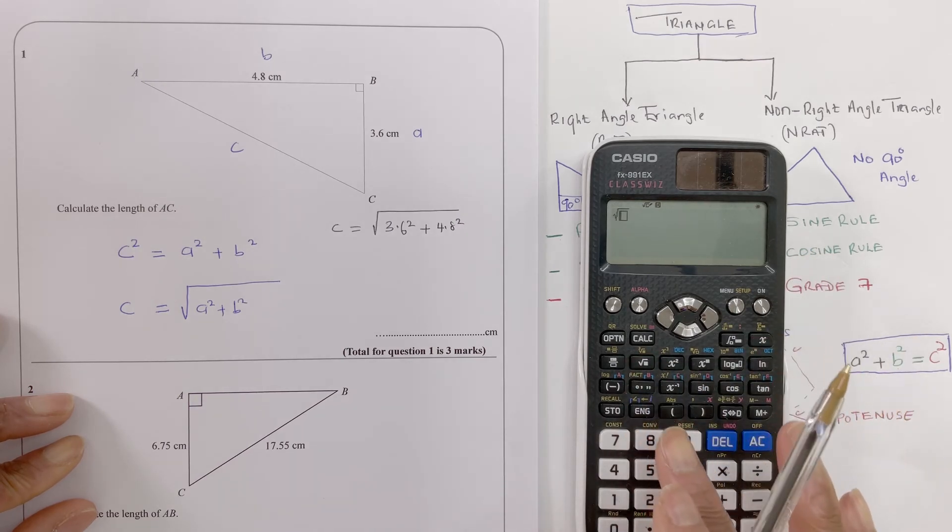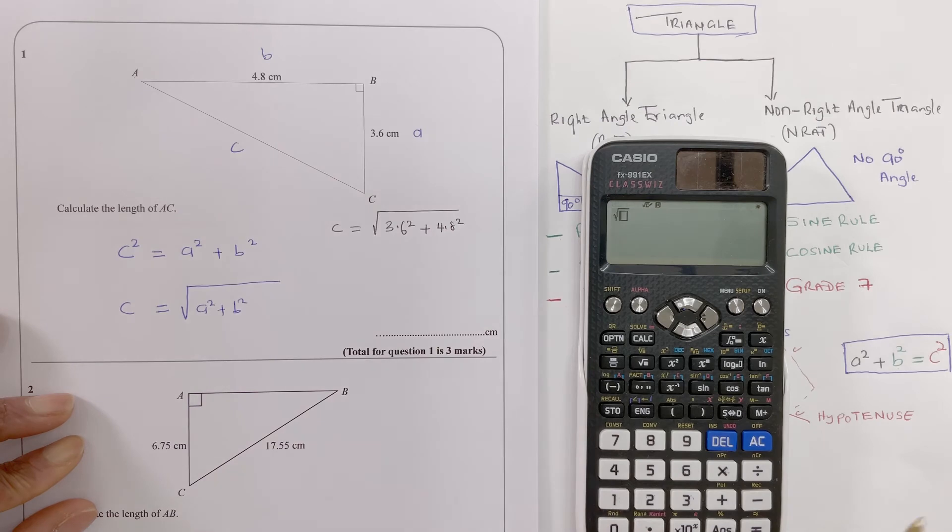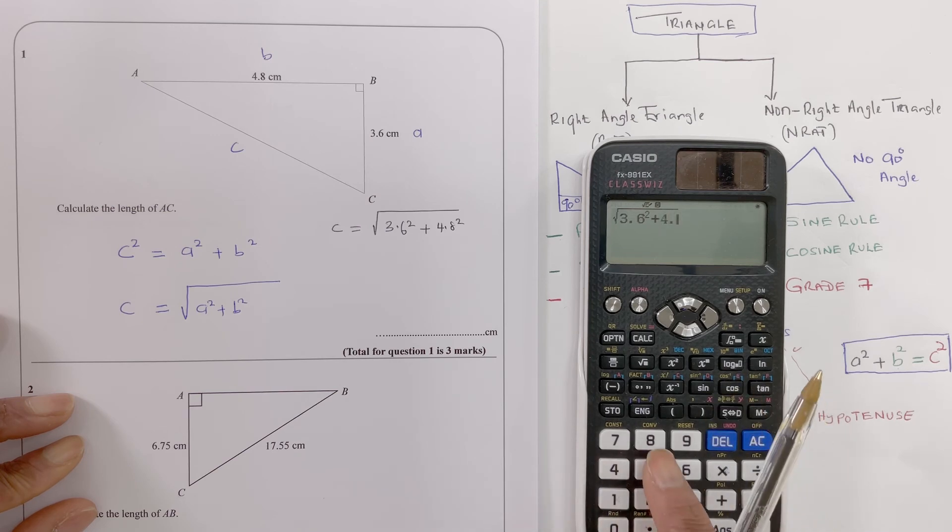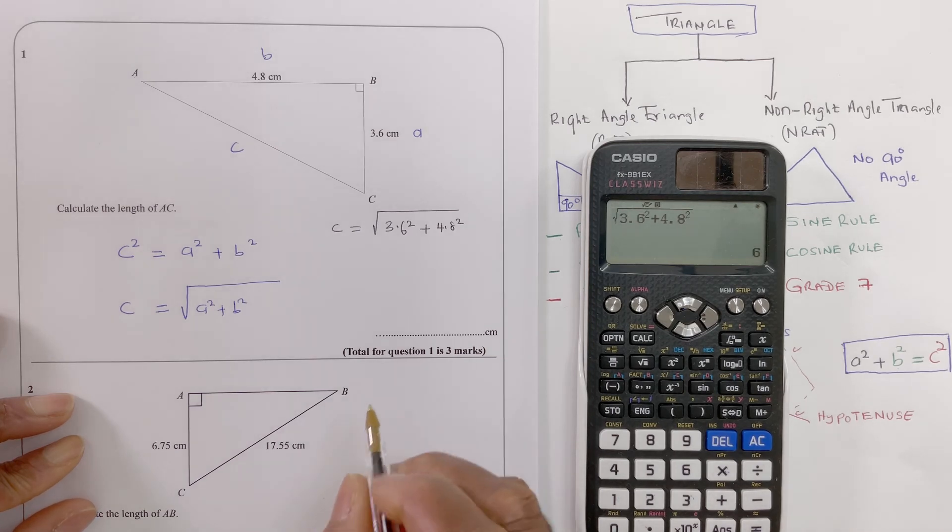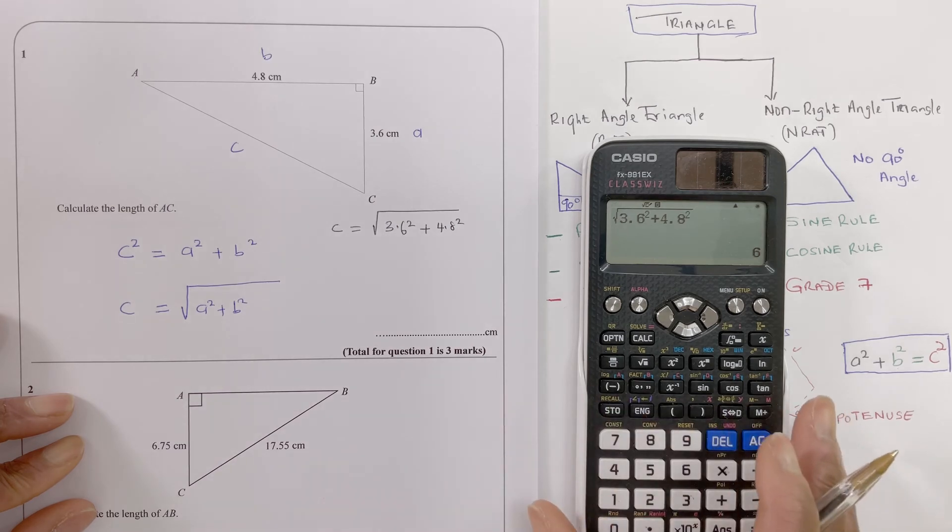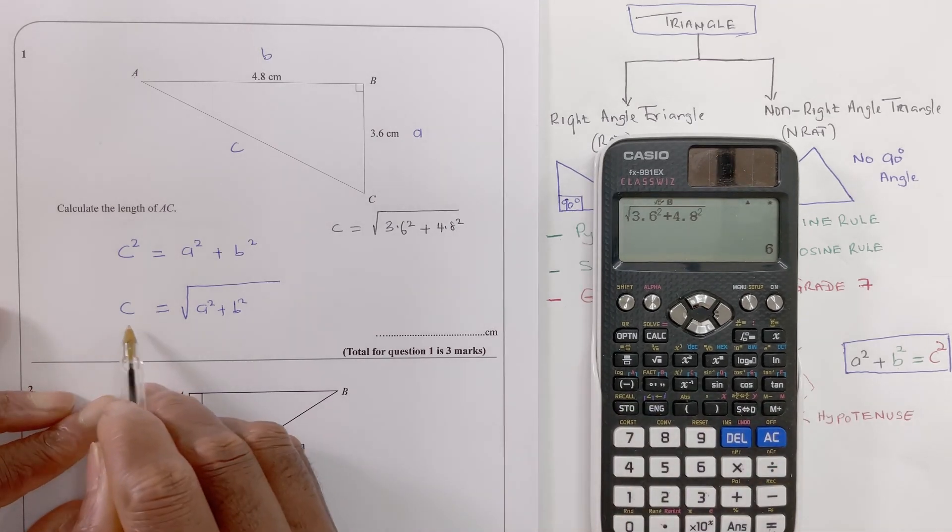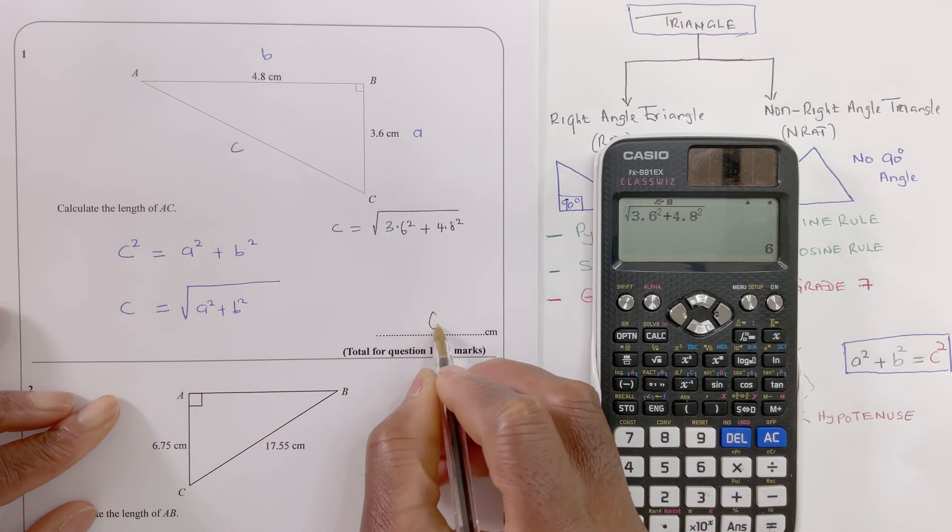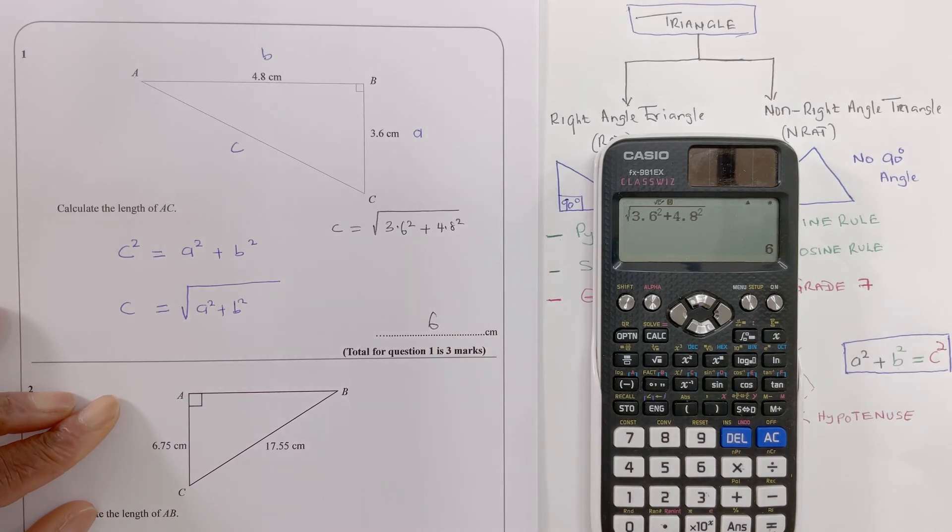You have to be careful doing this: 3.6 squared plus 4.8 squared. When you press the equals sign, it gives us 6, so c is basically 6 centimeters. That's question one.